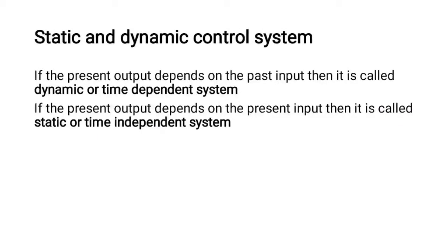Static and dynamic control systems: if the present output depends on the present input only, it is called a static or time-independent system. If the present output depends on past input as well, it is called a dynamic or time-dependent system. In a static system, whatever input you give, you get the output corresponding to that present input. In a dynamic system, the present output may consist of both past and present inputs.